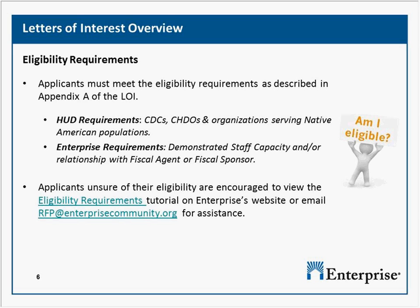To be considered eligible for funding, applicants must meet the eligibility requirements described in Appendix A of the LOI. There are some HUD-specific requirements that limit grant funding under the Section 4 program to CDCs, CHOTOs, and organizations serving Native American populations. The program also requires that applicants have demonstrated staff capacities to successfully manage a federal grant award and perform the proposed grant activities. Demonstrated staff capacity means that your organization has staff — either full-time, part-time, or contracted — handling day-to-day organizational duties with relevant experience to oversee and implement projects and programs. Organizations that rely solely on volunteers, donated staff, board members, or consultants are considered as not having demonstrated staff capacity.